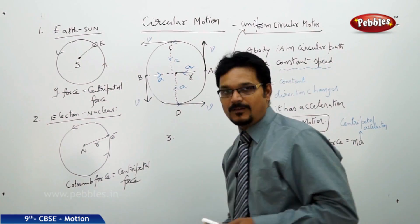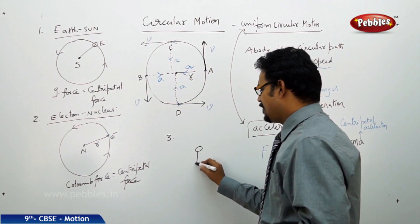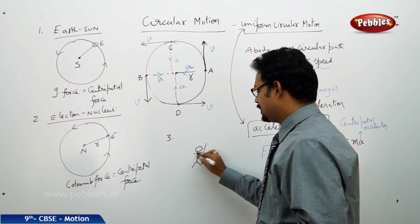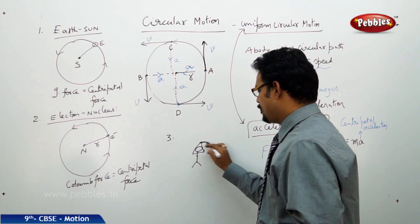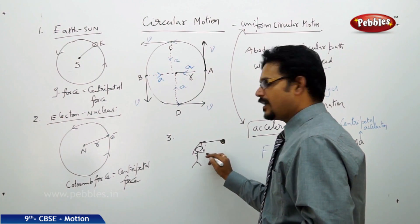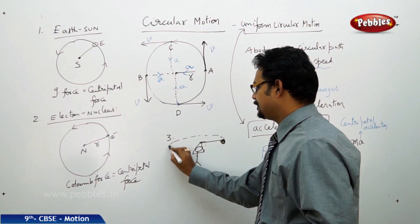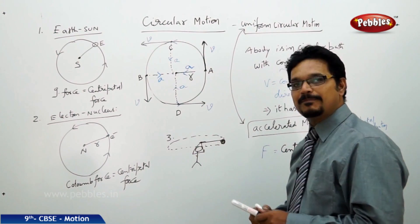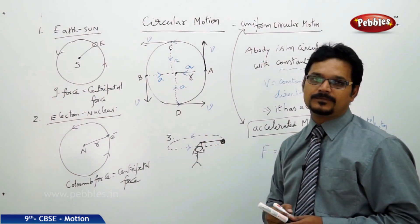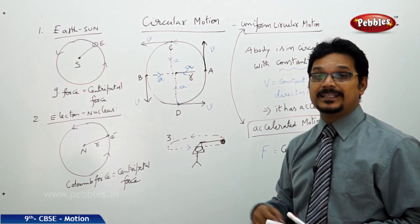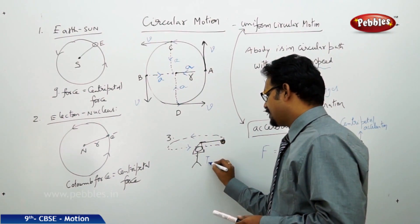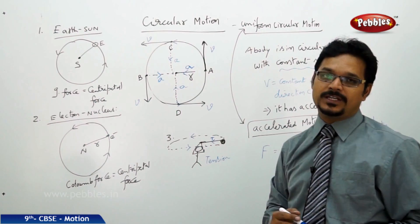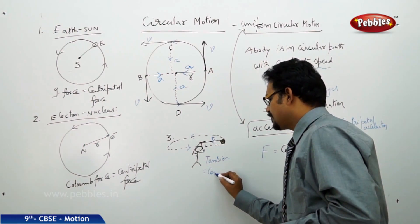The third example is a person standing on the ground who has taken a rope or string tied to a stone and is whirling it. The stone is in a circular path. Here also, centripetal force acts. But here, the tension in the string works like a centripetal force. So tension equals centripetal force.